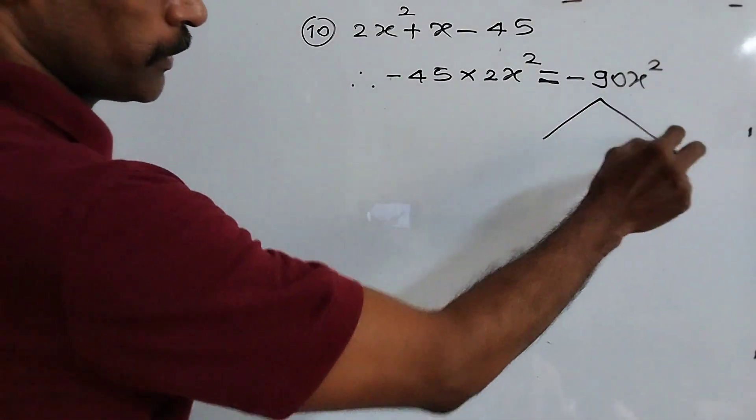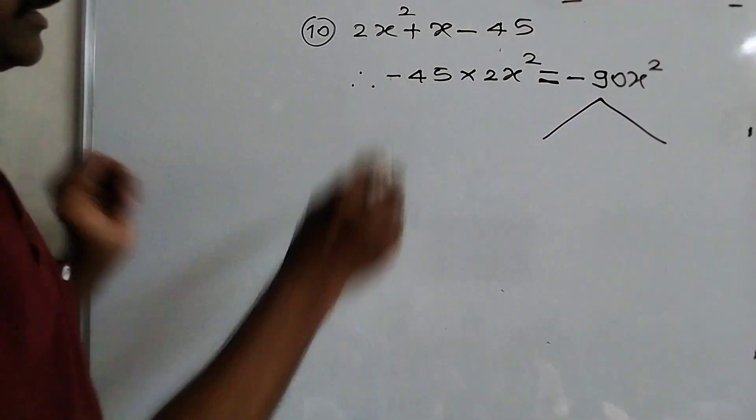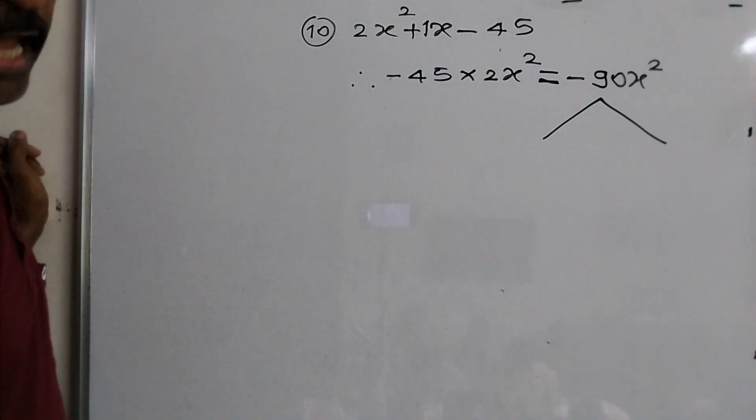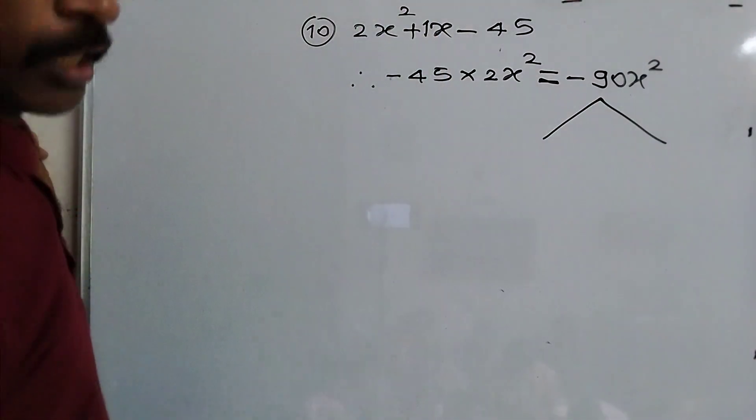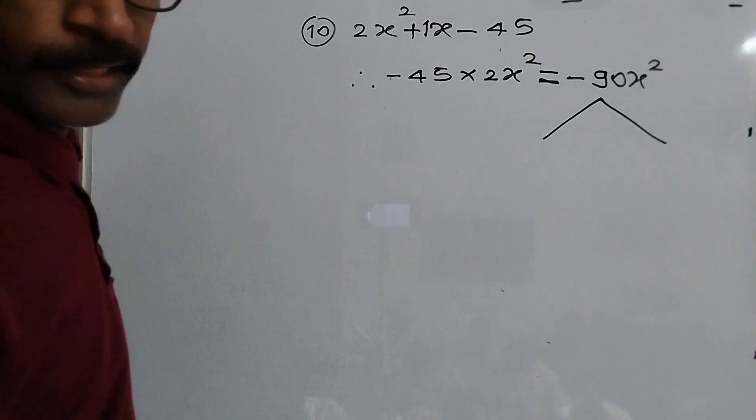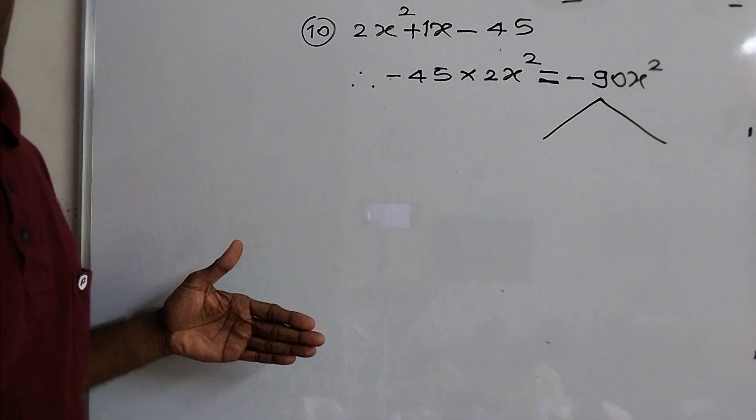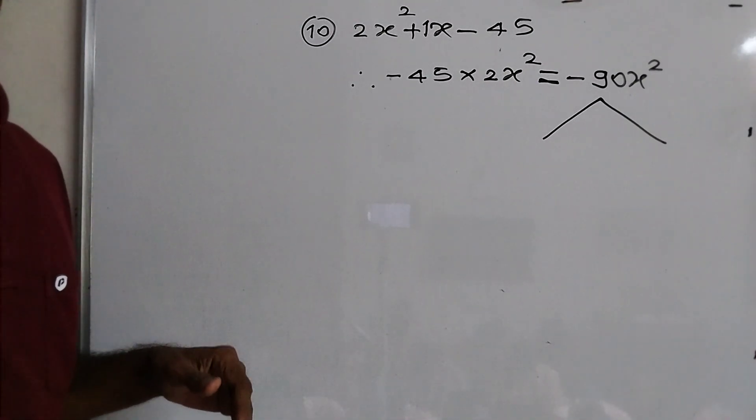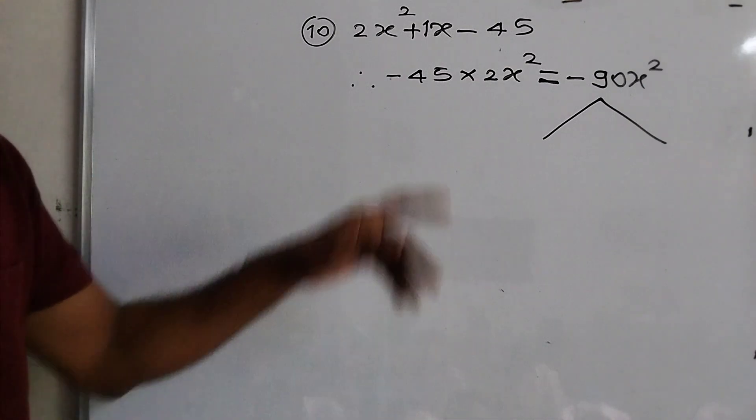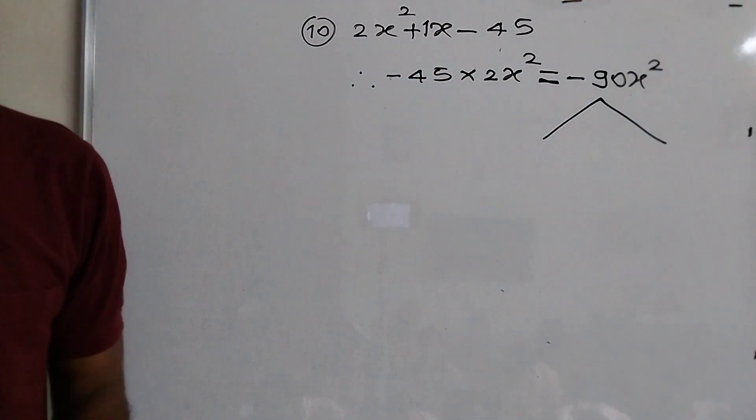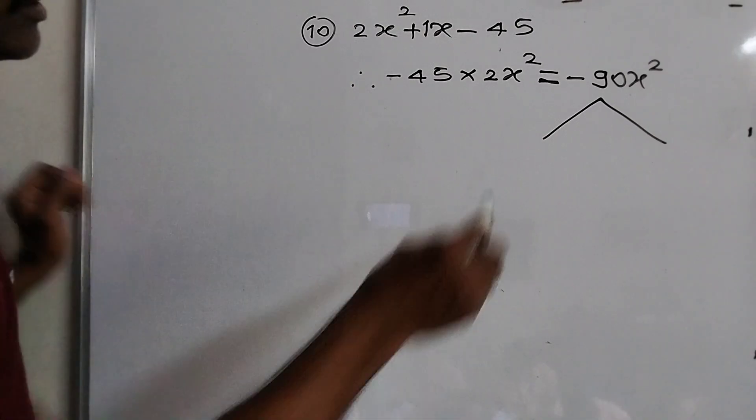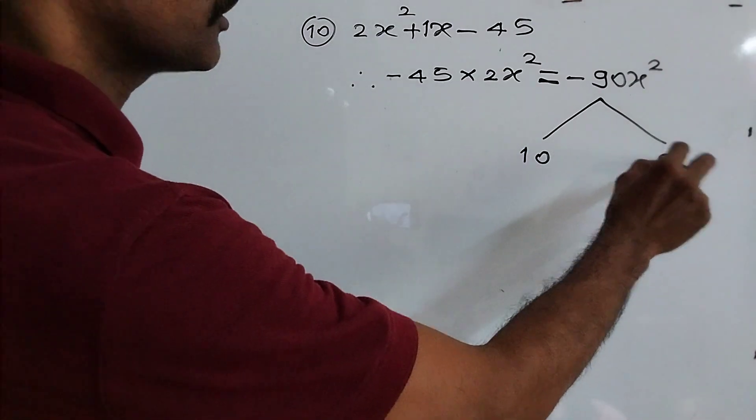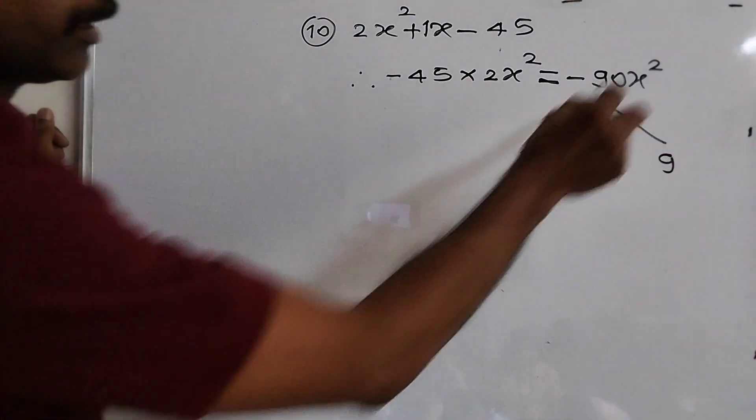Now we split this 90. We want plus 1x. Did you understand? When we split 90 into 2 parts, then what is splitting? 5 into 9. We want 1. 5 and 9, you get 1. 9 into 10, 9 into 10. Very good. Then distribute x.